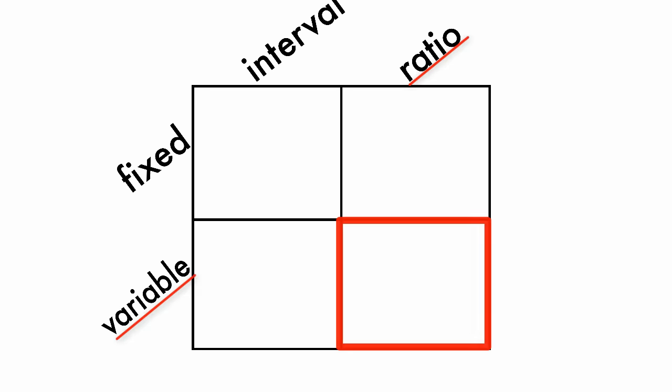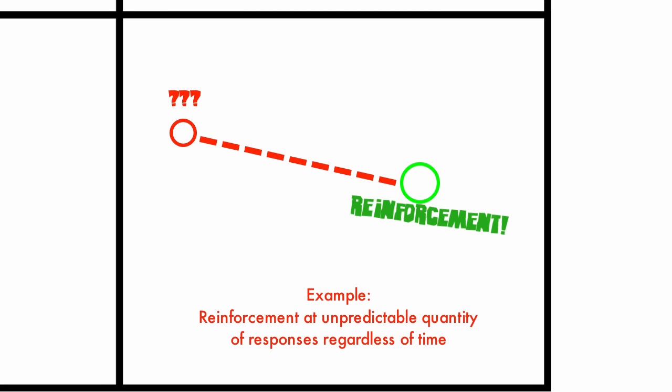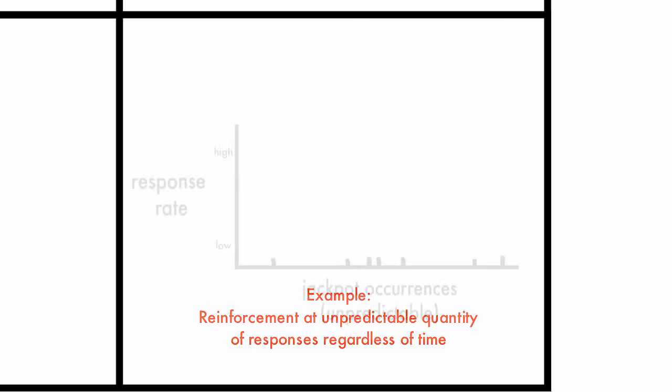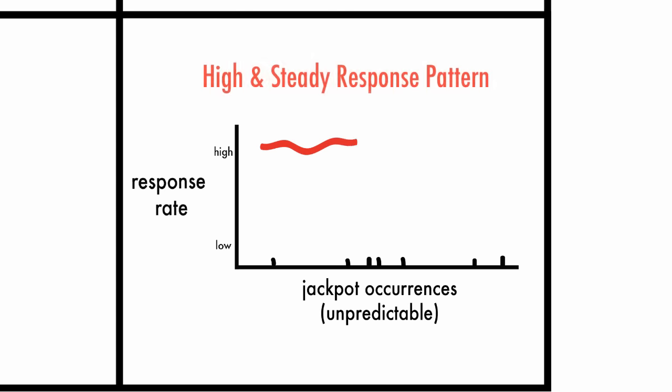A classic example of a Variable Ratio schedule is known as the One-Armed Bandit, which is a slot machine. You must pull the arm an unspecified number of times before you are reinforced with a jackpot. Sometimes you can just put in a few quarters, pull the arm once, and win a big jackpot. Other times you pull and pull, but still never win. Variable Ratio schedules produce high and steady rates of responding.